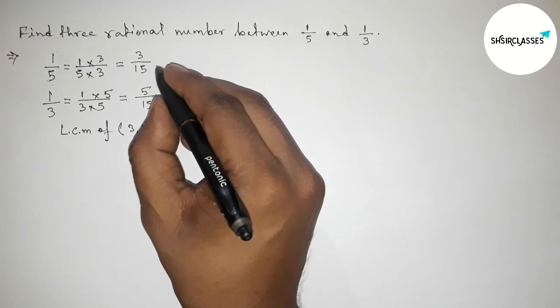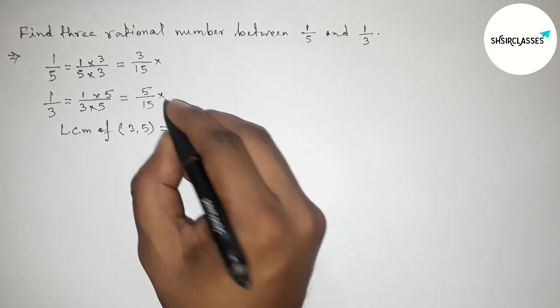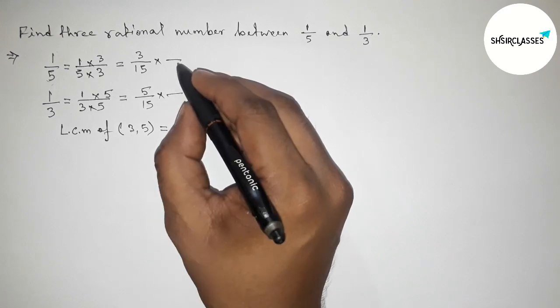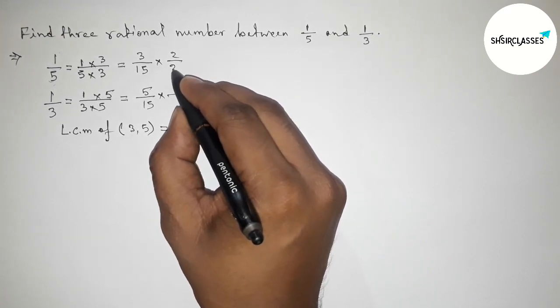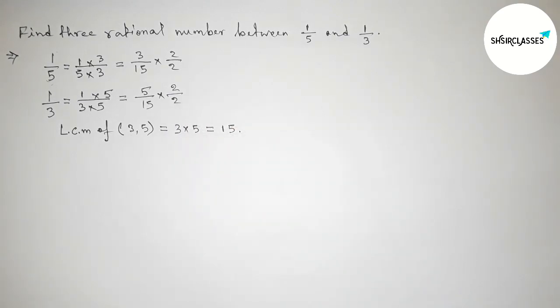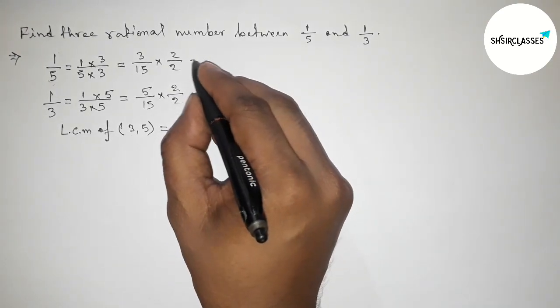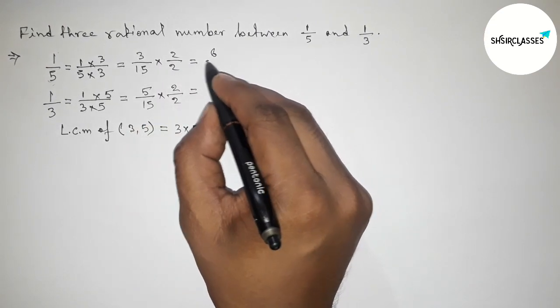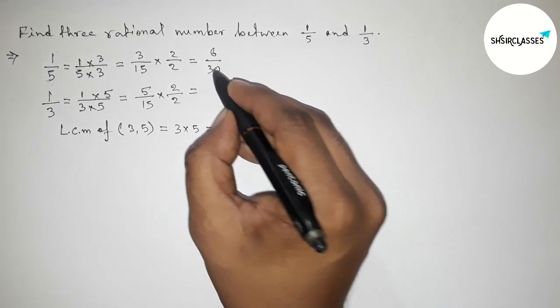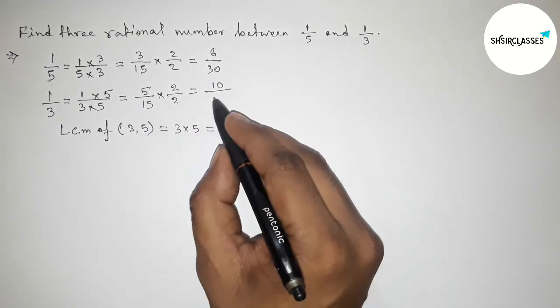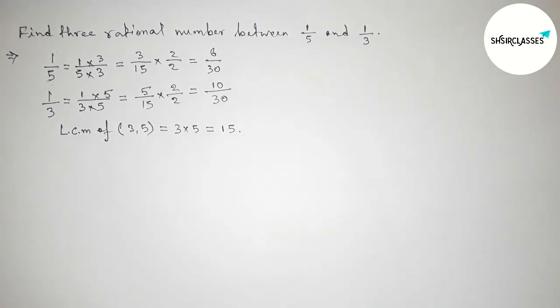Now we have to find three rational numbers between 1/5 and 1/3. So again we have to multiply both numbers by a number, taking here up and down by 2. Calculating this, so this is 6/15 to 30 and this is 10/30.